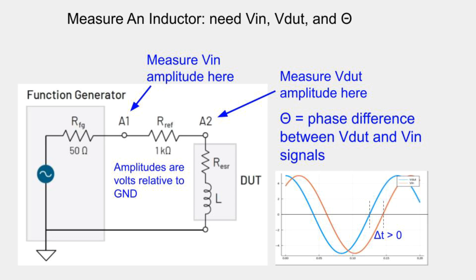One of the goals of the method is to measure the value of that extra resistance, R-ESR. It's also possible to use this method with the parallel model, although I won't go into too much detail on that. In order to measure an inductor, create the circuit shown. You'll need to measure three things: VIN, VDUT, and a phase difference.